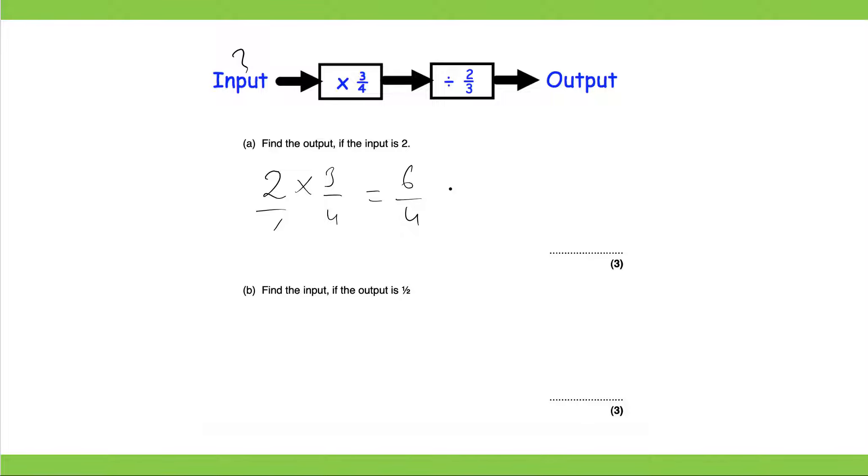And then you divide your answer by two thirds. So KFC, 6 over 4 multiplied by 3 over 2. That would give you 18 over 8. So we have 18 over 8 and then you change it to a mixed number which would give you 2 and two eighths which would be a quarter.